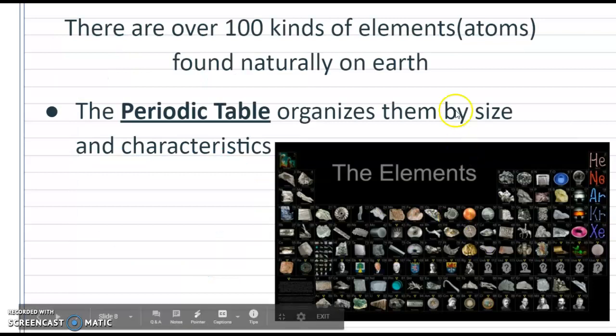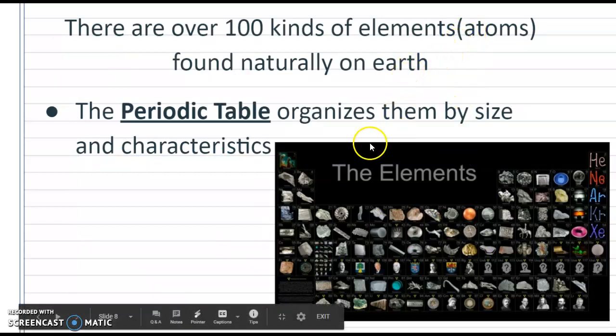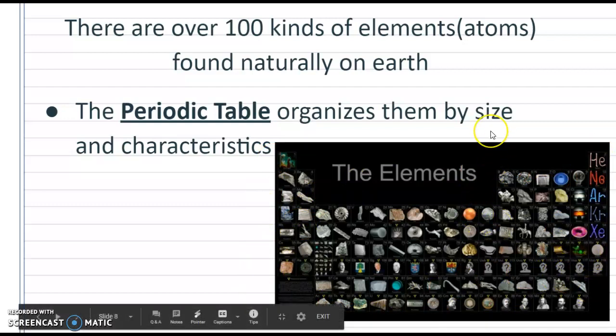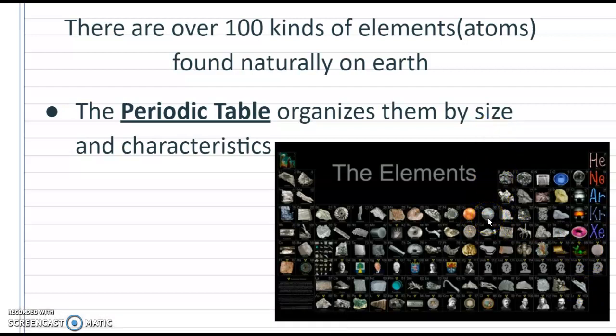There are over a hundred kinds of elements found naturally on the earth, and they're actually organized in what we are probably familiar with as a periodic table. So a periodic table is organized by both size and characteristic of that particular atom or element.